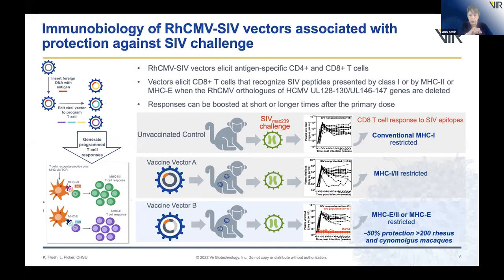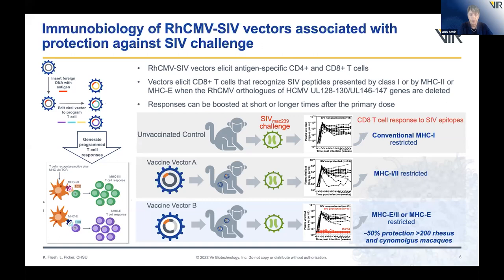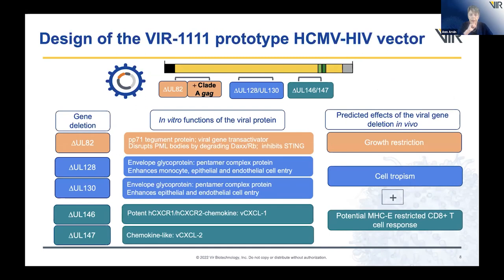In SIV challenge studies using an SIV antigen insert in rhesus CMV, protection was identified in at least half of the animals studied, and that protection depends on this special property of the T cell response. VIR 1111 is a prototype vector expressing clade A HIV GAG in a backbone called VIR2, with genetic modifications modeled from the rhesus studies. Trial objectives include primary safety, reactogenicity, and tolerability starting with seropositive volunteers, and secondarily the immunogenicity of the response to the vector. The trial design requires multiple ascending dose escalation and includes leukapheresis to ensure sufficient sample to understand in detail the immune response being elicited.